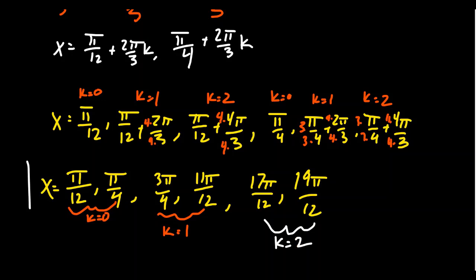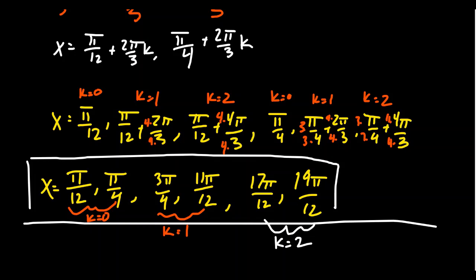This gives us all six solutions. Where did six come from? Well, sine had two general solutions. But then since we cut the period, those general solutions become three times as more frequent. So two times three gives us six solutions total.